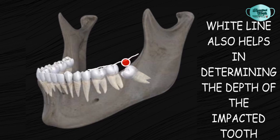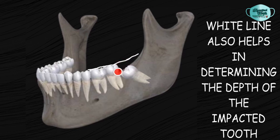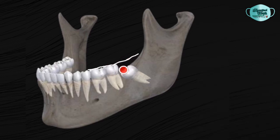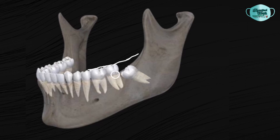The white line also helps in determining the depth of the impacted third molar by measuring the distance between the white line and the occlusal surface of the impacted tooth. Moving on, the A in WAR lines stands for the Amber line, which is an imaginary line drawn from the surface of the bone lying distal to the third molar, extended to the interdental septum between the first and second molars.